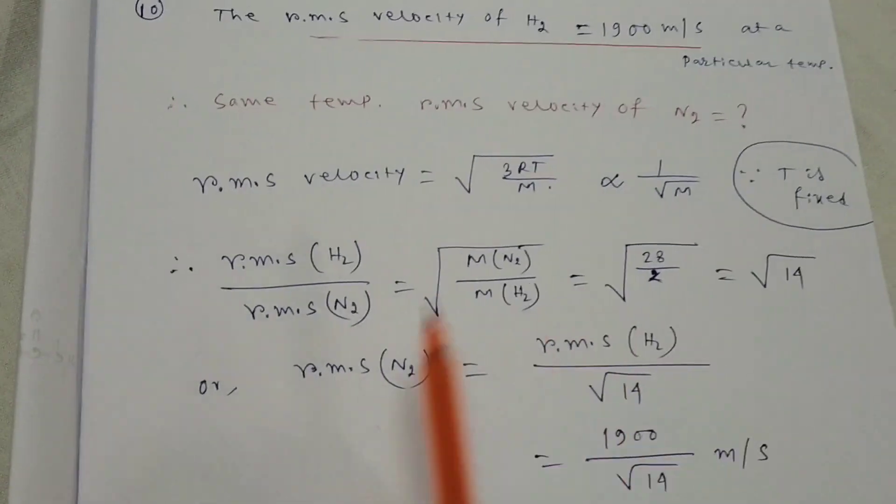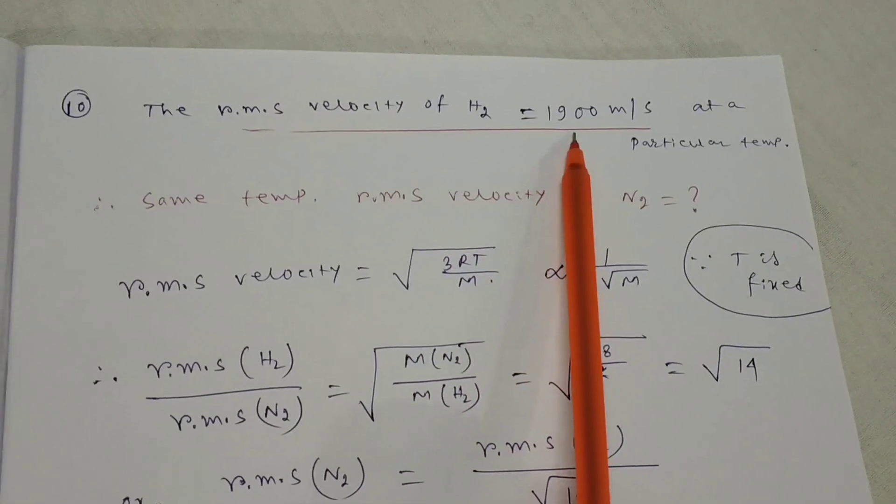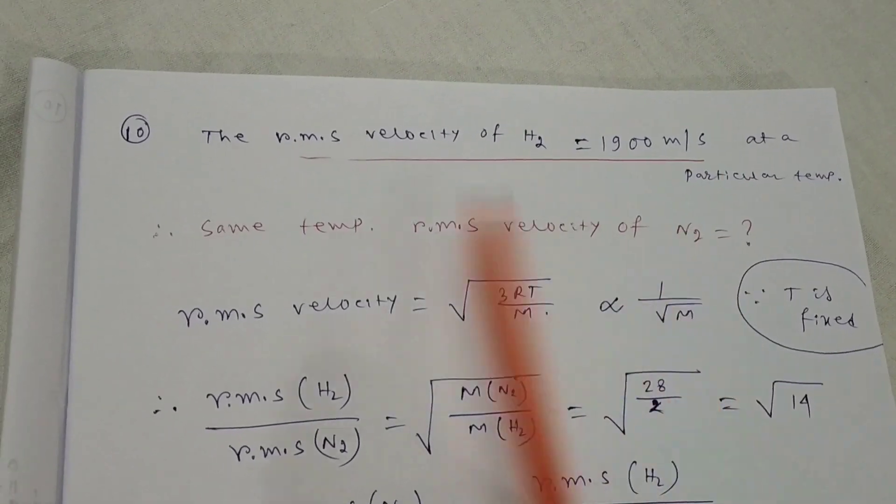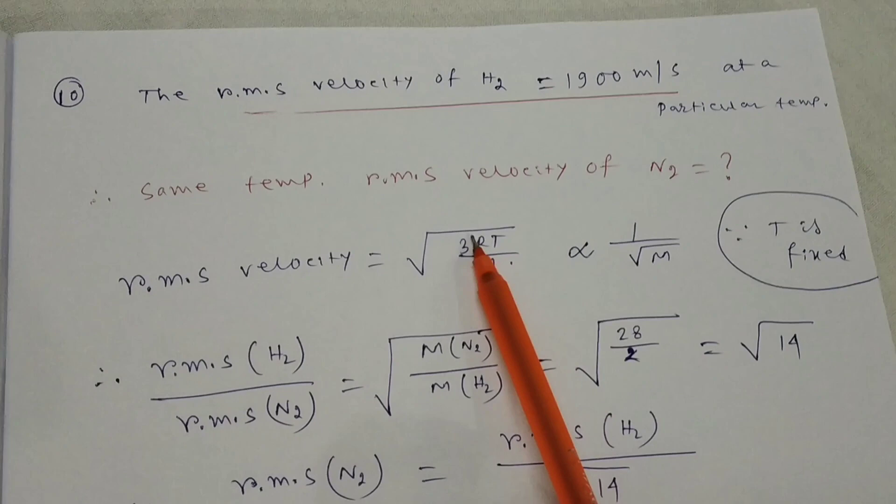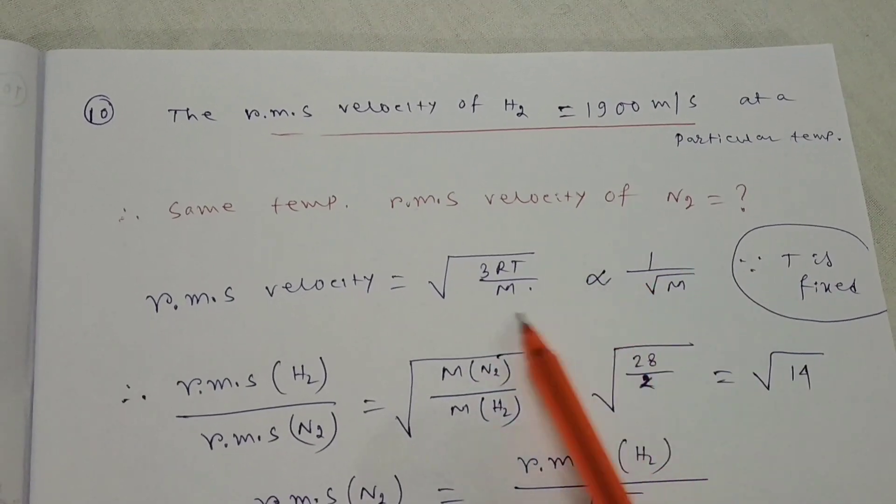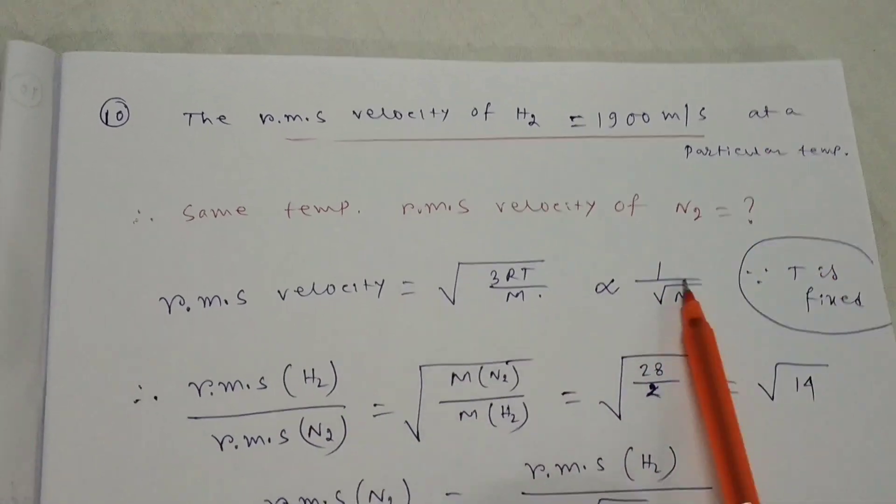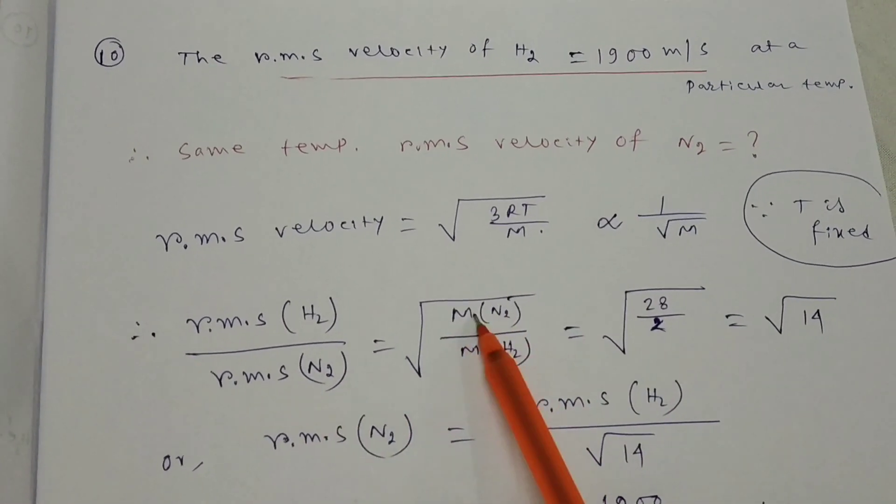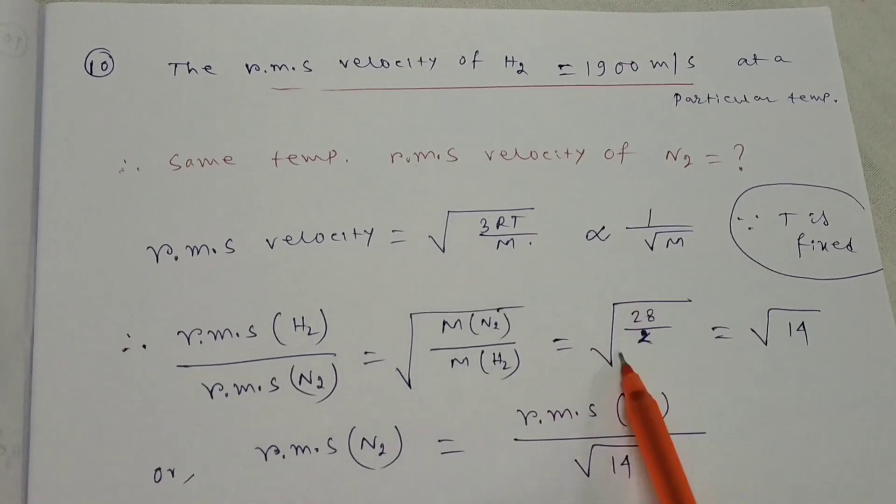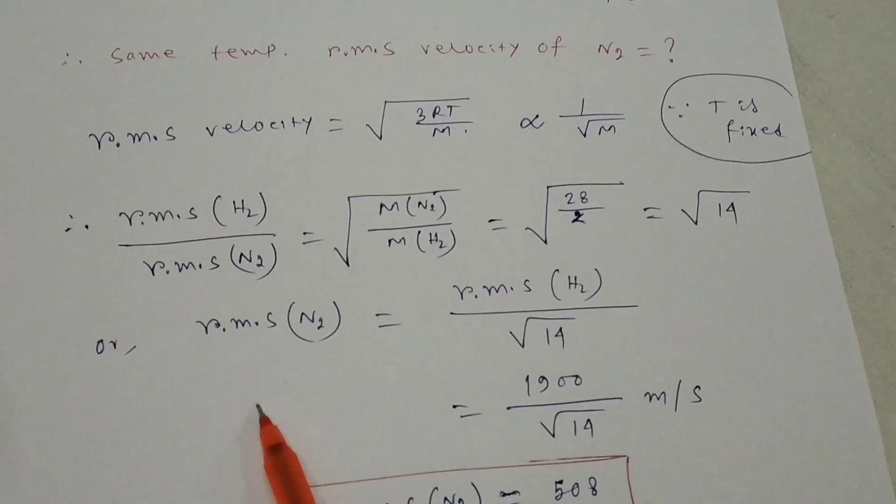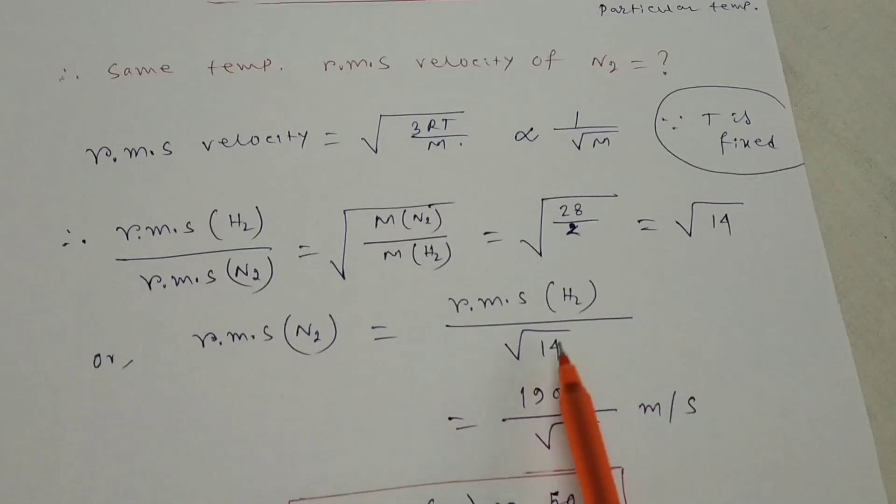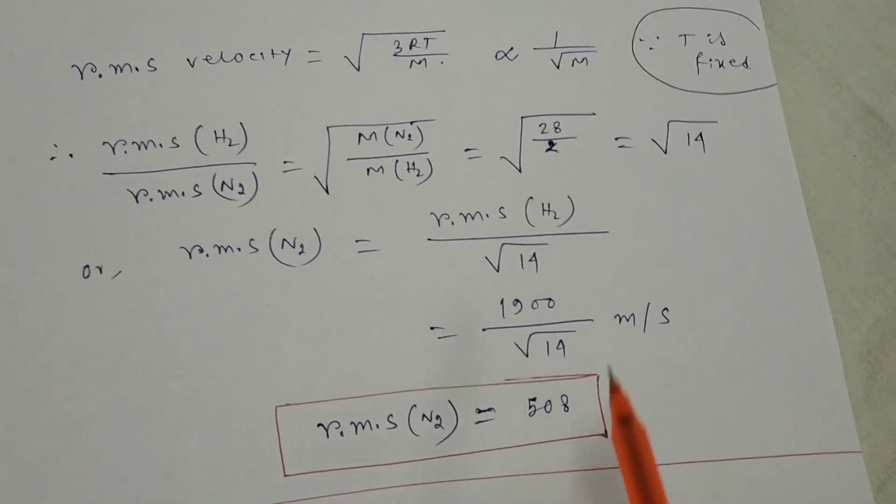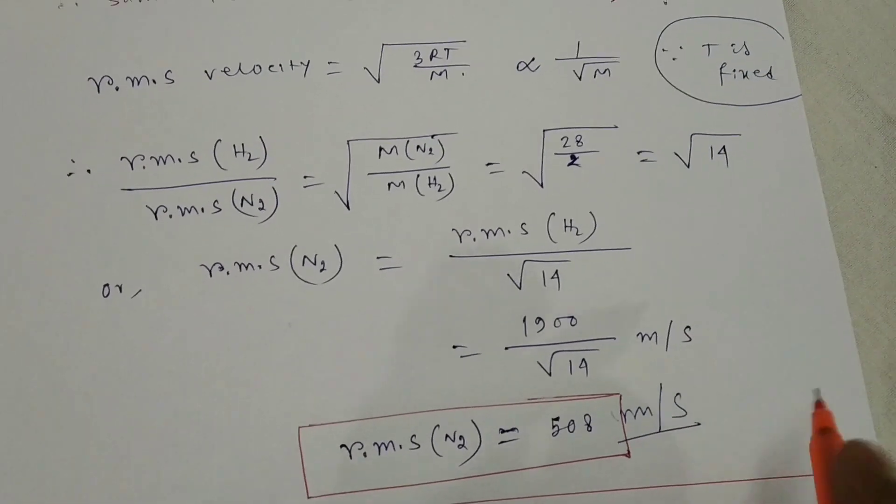The last question: RMS velocity of hydrogen is 1900 m/s at a particular temperature. What is the RMS velocity of N2 at the same temperature? RMS velocity equals root of 3RT/m, so it's proportional to 1/root(m). Therefore, RMS of H2 divided by RMS of N2 equals root(M of N2/M of H2), equals root(28/2), equals root 14. So RMS of N2 equals 1900 divided by root 14, equals 508 meters per second.